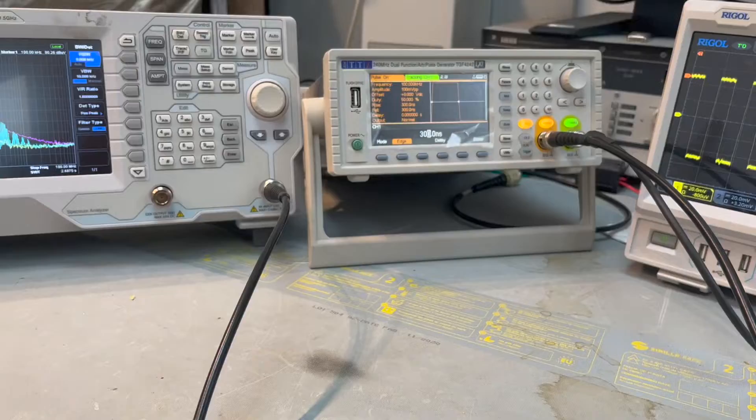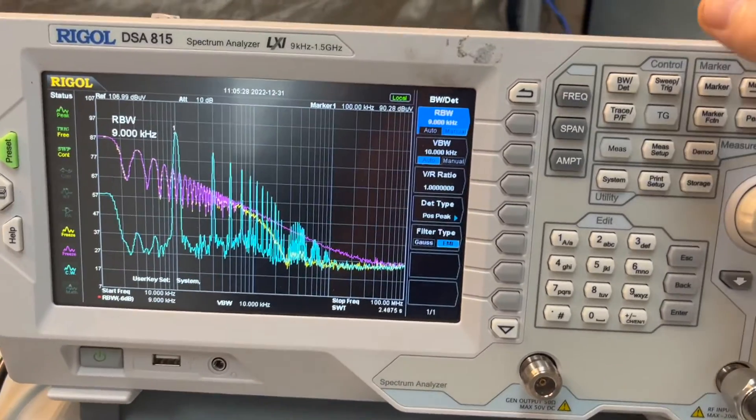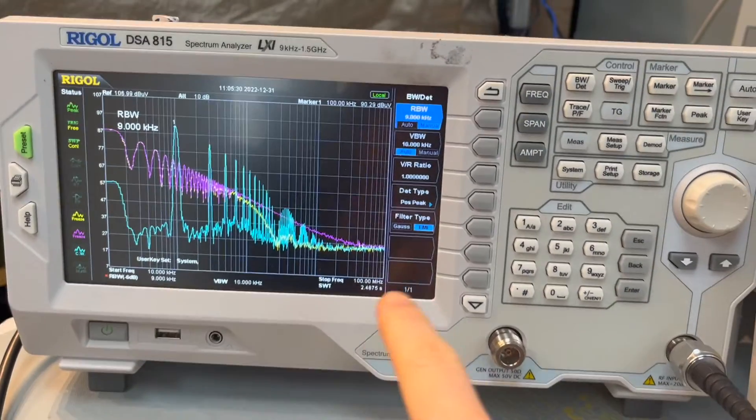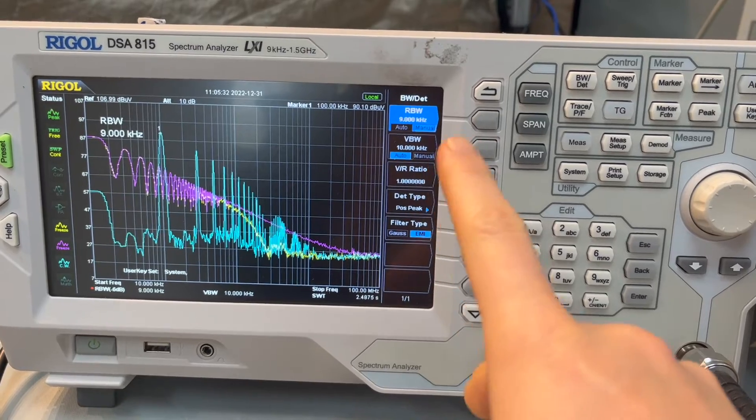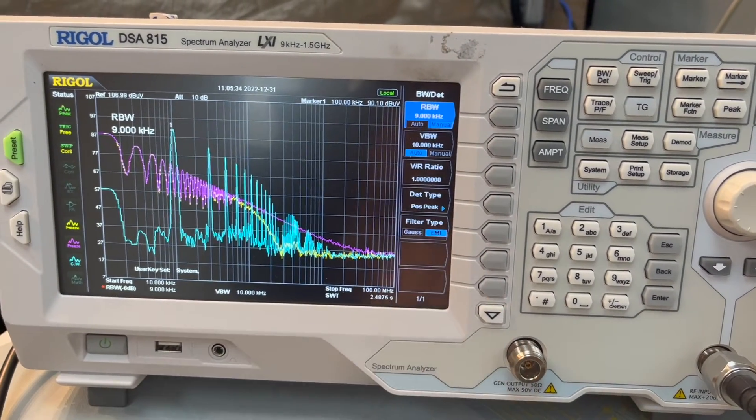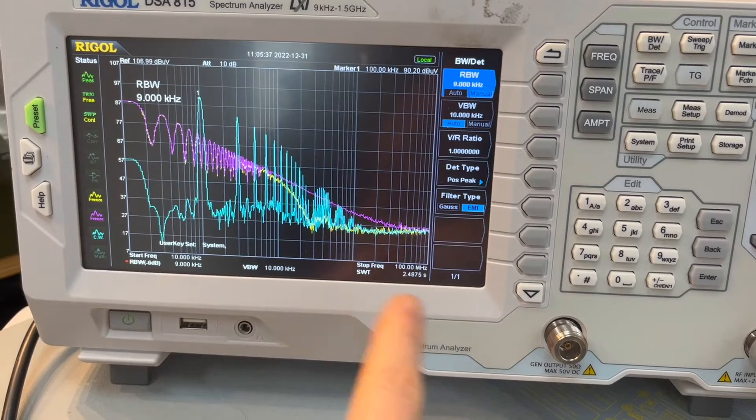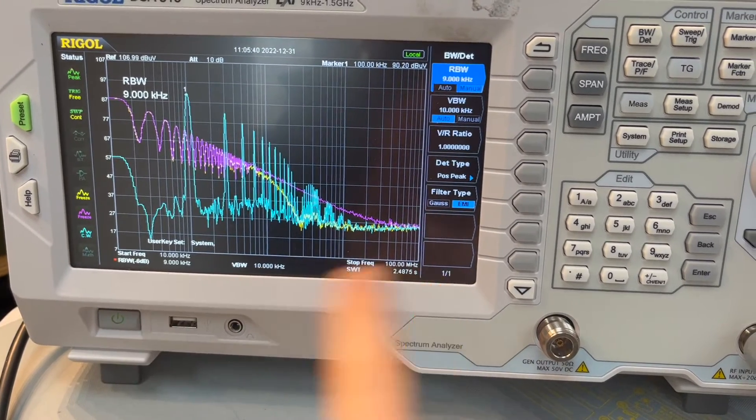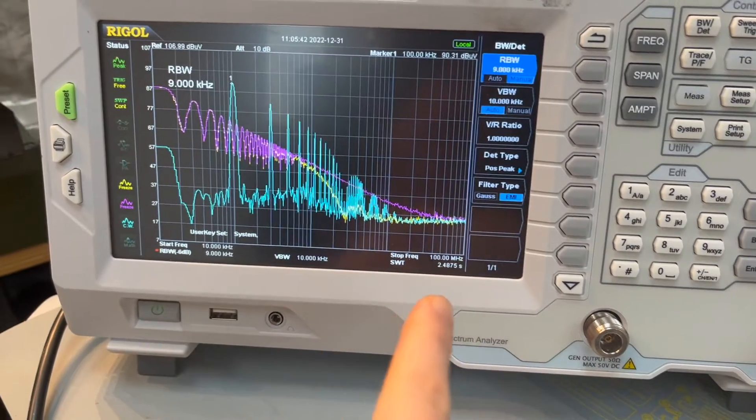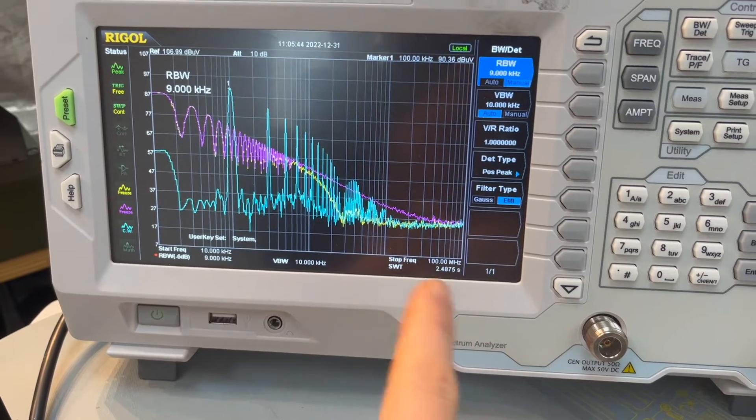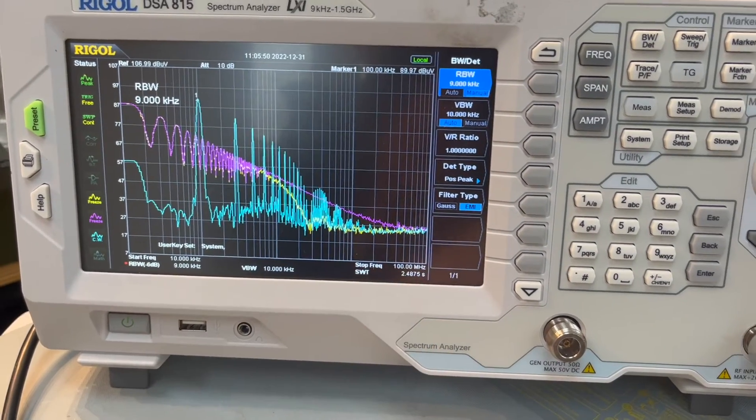Going to the details of the spectrum analyzer, we select the bandwidth to be 9 kHz, and using an EMI filter type. The frequency span is between 10 kHz to 100 MHz, and we're using log-rhythmic scale, which shows the spectrum results.